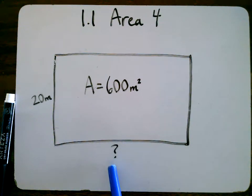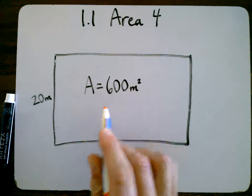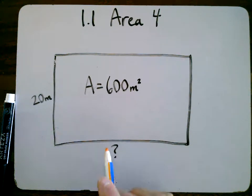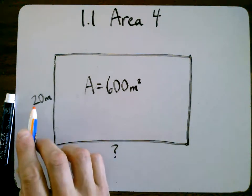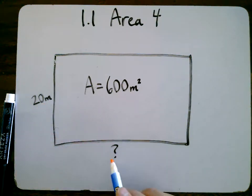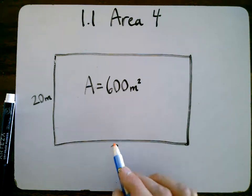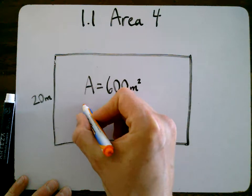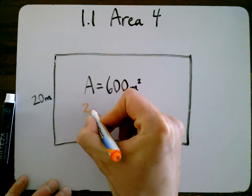We don't have that information and we're trying to figure that out. So can we use what we know about how to calculate area to figure out what that is? You might remember we need to multiply both sides to get the area, but what if we don't know one side? Well, 20 meters times something equals 600 meters squared. So I'm going to leave out the meters just to have a look at the numbers here.